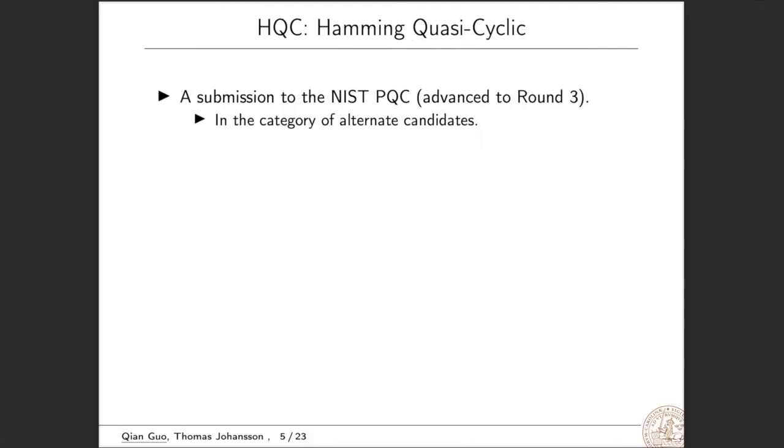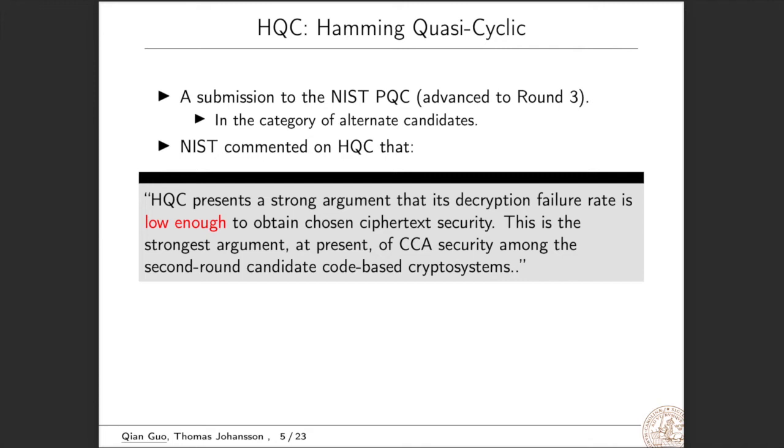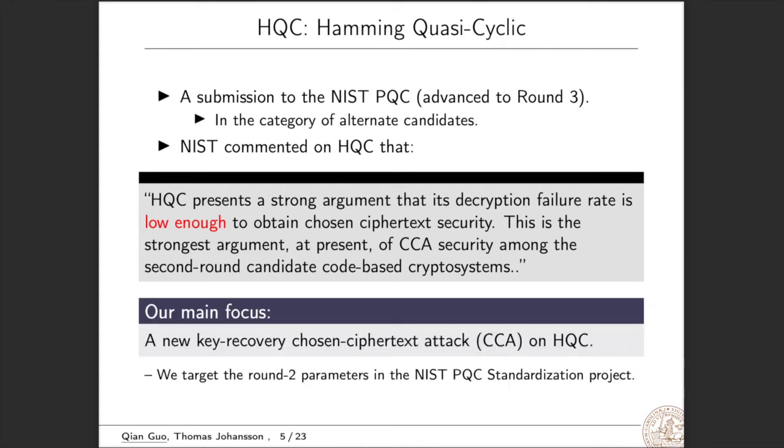What is HQC? HQC is short for Hamming quasi-cyclic, means that they are using Hamming quasi-cyclic codes. HQC is a submission to the NIST PQC project, and it has advanced to round 3 in the category of alternate candidate. NIST commented on HQC that HQC presents a strong argument that its decryption failure rate is low enough to obtain chosen ciphertext security. This is the strongest argument at present of CCA security among the second-round candidate code-based cryptosystems. So we want to study the CCA security of HQC in details.